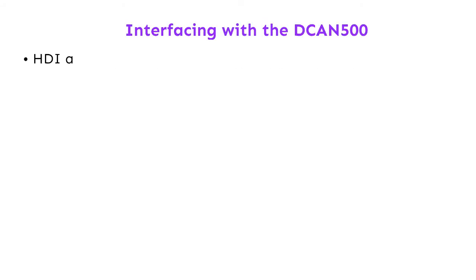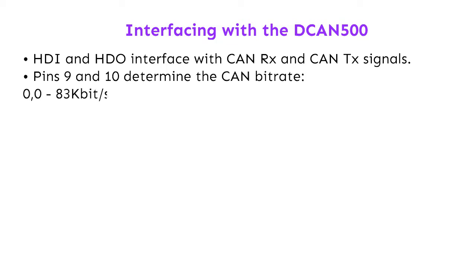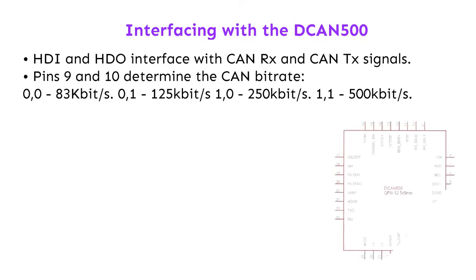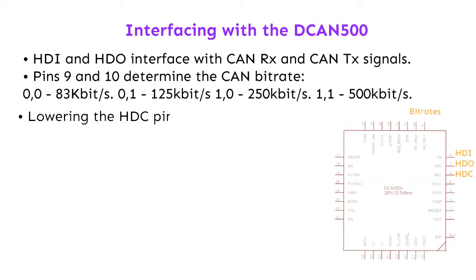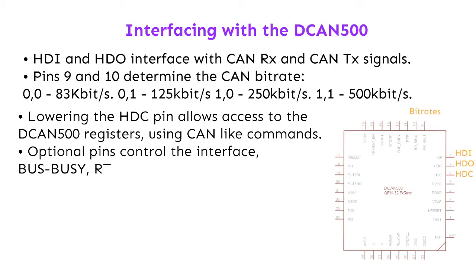Interfacing with the DCAN 500: HDI and HDO interface with CAN-RX and CAN-TX signals. Pins 9 and 10 determine the CAN bitrate, from 0-0 for 83 kbps to 1-1 for 500 kbps. Lowering the HDC pin allows access to the DCAN 500 registers using CAN-like commands. Optional pins control the interface: bus busy, RTR, and sleep, with coupling to the powerline by a simple capacitor and protection diodes.